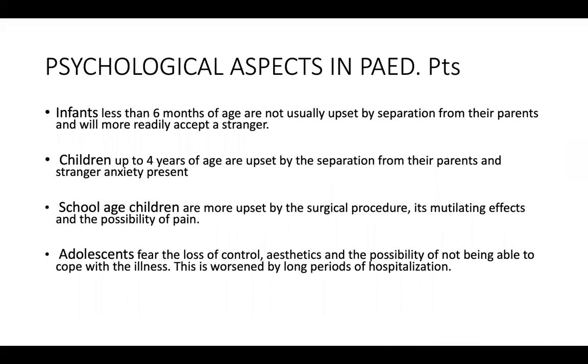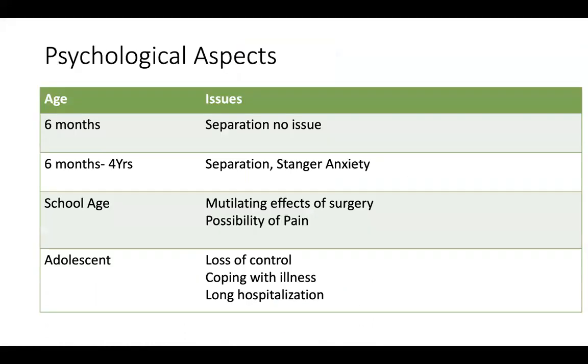Let's look at the first slide. Very busy slide. Lots of content on it. Let's make it simple. Let's simplify this. So we will create a table. And these are psychological aspects which we anesthetists need to deal with. At six months, their separation is not an issue. But at six months to four years, separation and stranger anxiety happens. At school age, they're worried about mutilating effect of surgery, possibility of pain. But when they're adolescent, they worry about loss of control, coping with illnesses. Long hospitalization is an issue. Missing out from school is an issue. So these are making it very clear to the point which the audience will understand.